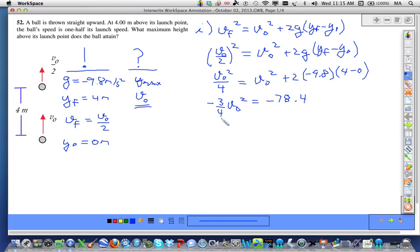Now, dividing both sides by minus 3 fourths and taking the square root of both sides, we end up with an initial speed at the launch point of 10.22 meters per second.